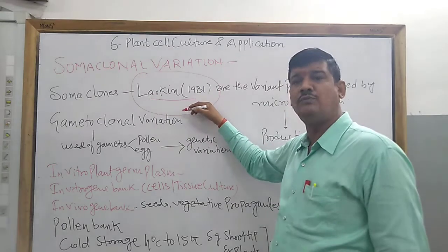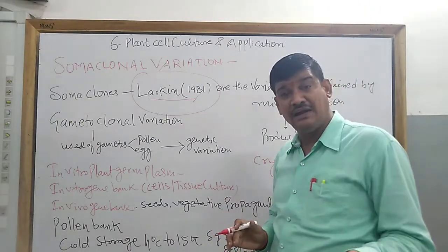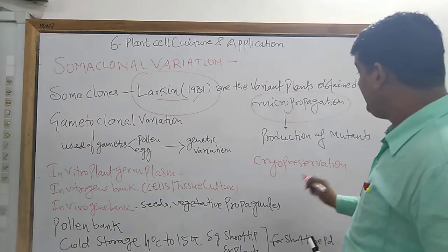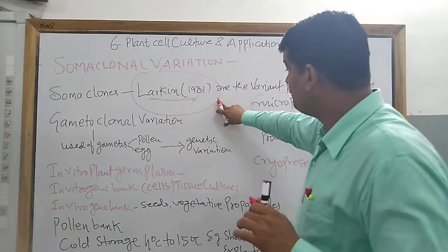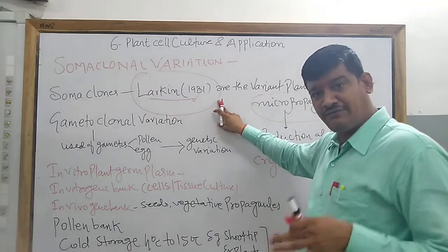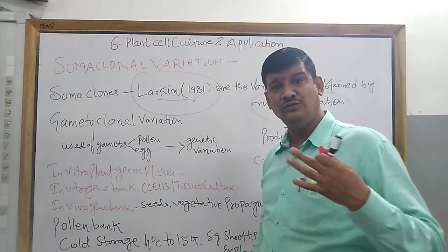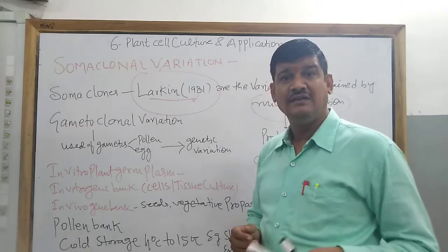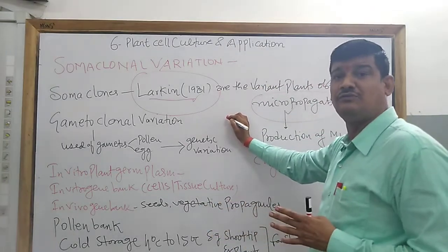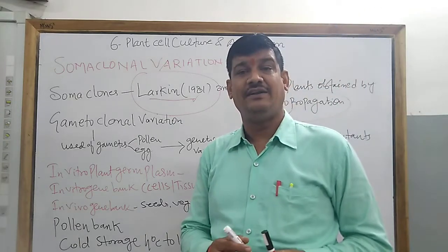Larkin is the man who introduced somaclones in the year 1981. These are variant plants obtained by the process of tissue culture or micropropagation. Somaclones have very important roles in the production of new breeds and new species in crop plants. Apart from that, they are used to improve plant breeding programs for the production of new species, new races, and they are also useful in producing disease-resistant, salt-resistant, and water-resistant plants.